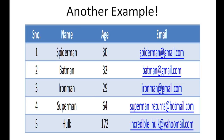Let's look at this table, which is different from the one in the last tutorial. This one has four fields. The first is serial number with values one through five for the five rows. The next field is name, containing names of superheroes — Spider-Man, Batman, Iron Man, Superman, and Hulk. Then there's an age field and an email field with fake superhero email addresses.